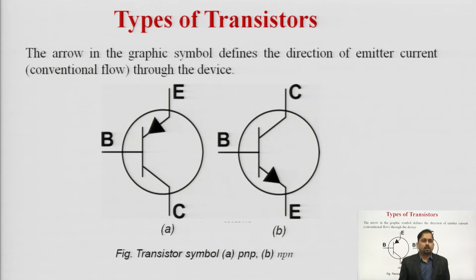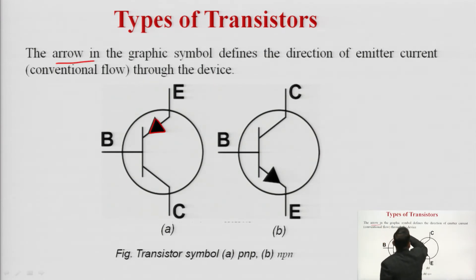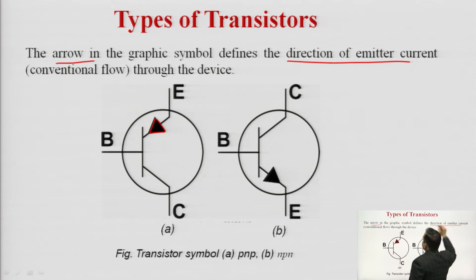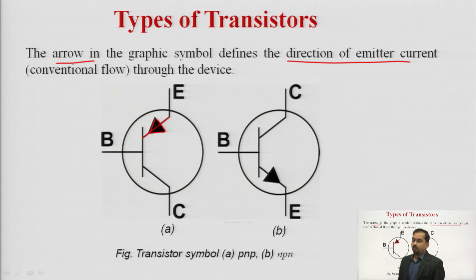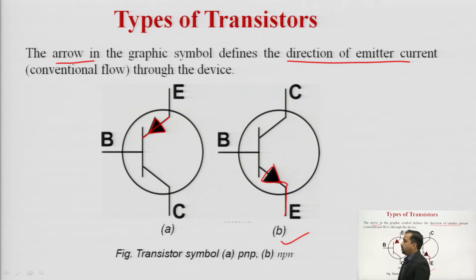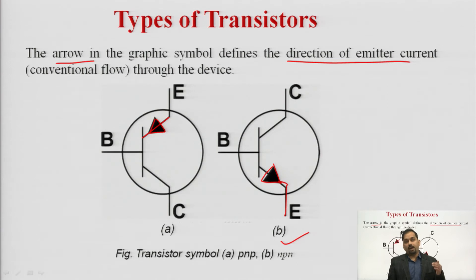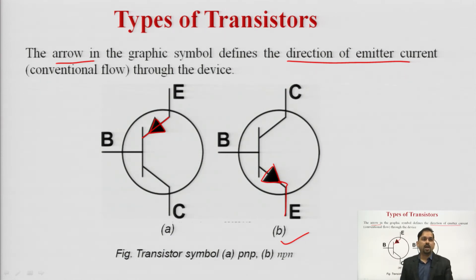The graphical symbols for PNP and NPN transistors show the direction of emitter current via an arrow. For PNP, the current enters toward the base from the emitter; for NPN, the current emits outward from the emitter terminal. So for PNP, current enters the device, and for NPN, current exits from the emitter terminal.